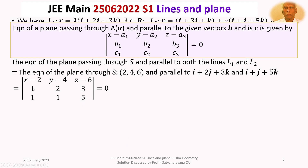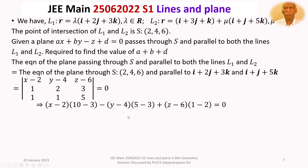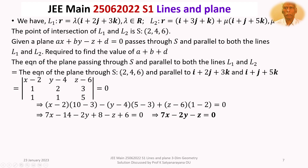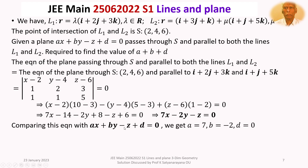The determinant has first row (X - 2, Y - 4, Z - 6), second row (1, 2, 3), and third row (1, 1, 5). Expanding along the first row, we get: 7X - 14 - 2Y + 8 - Z + 6 = 0, which simplifies to 7X - 2Y - Z = 0. Comparing with AX + BY - Z + D = 0, we get A = 7, B = -2, and D = 0.